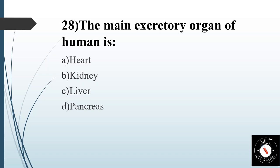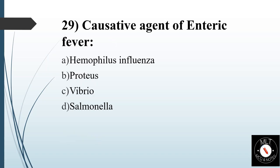Twenty-eighth question. The main excretory organ of humans is. Option A: Heart. Option B: Kidney. Option C: Liver. Option D: Pancreas. Answer is Option B: Kidney.